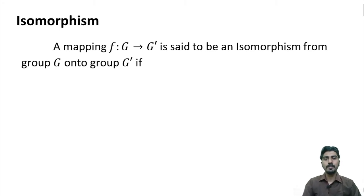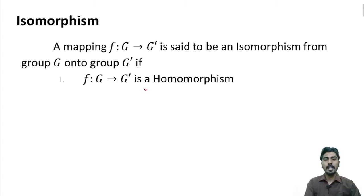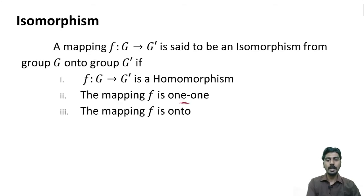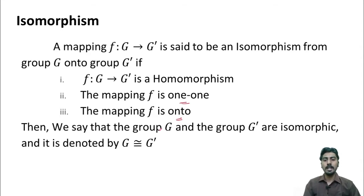Before proving this theorem, let us know what is an isomorphism. Isomorphism is a mapping f from G to G dash satisfying three conditions. The first condition is f should be a homomorphism. Next, the mapping f should be one-one. And finally, f should be onto. Whenever there is an isomorphism from a group G onto the group G dash, we say that the group G and G dash are isomorphic, and it is denoted by this symbol.